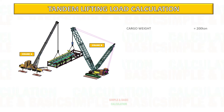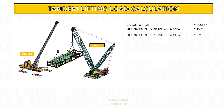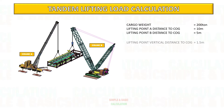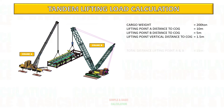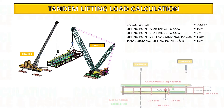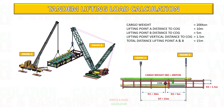Example. Cargo weight to be lifted is 200 ton. Lifting point A and B distance to center of gravity is 10 meter and 5 meter. Vertical distance of lifting point to center of gravity is 1.5 meter. Find the load for crane A and crane B.